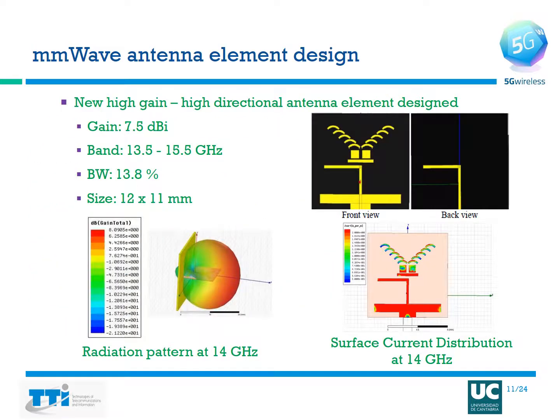What you see here now is the millimeter wave antenna element design. The design is a new high gain, high directional antenna element. It has a gain of 7.5 dBi and operates in the bandwidth of 13.5 to 15.5 GHz. It has a fractional bandwidth of 30.8% and has a size of one centimeter square. Both the front view and the back view of the design are shown in the figure. The black color signifies the substrate and the yellow color signifies the copper printed on top of it.